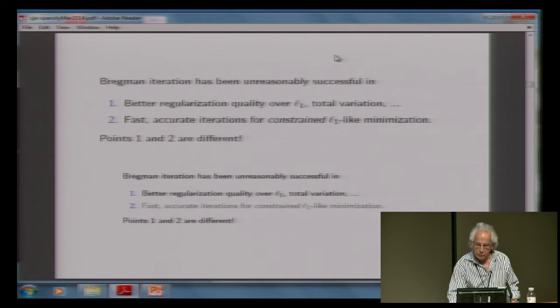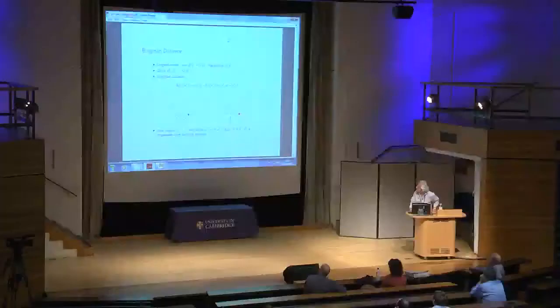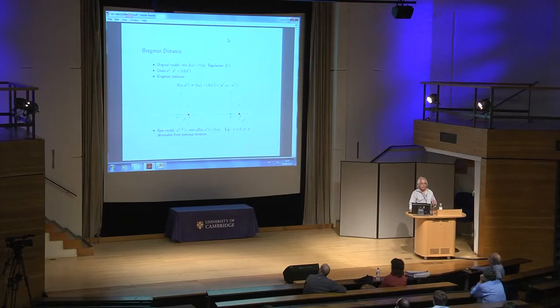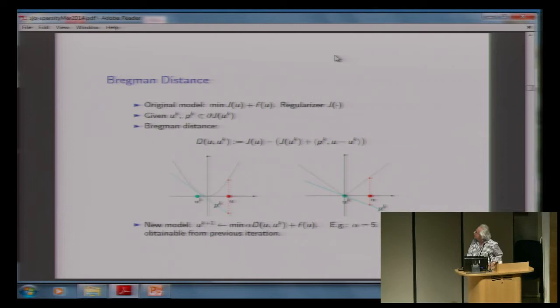If you do Bregman distance and Bregman iteration for things like grad U squared or the L2 norm of U squared, it's not fast — nothing special. But if you do it for L1, it is super-duper fast, and that is because of that lovely V shape. The subgradient is a function which is actually a derivative — if it's smooth, it's a line which gives you the Bregman distance to be non-negative for a convex function.